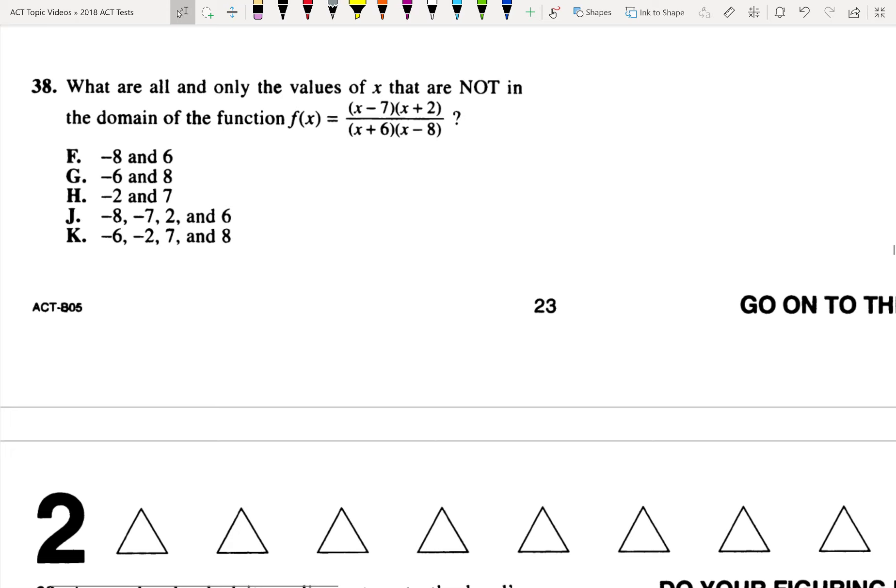Number 38 wants to know what are not in the domain of the function. We always find our restrictions by setting the denominator equal to zero, so that would just be x equals negative six and eight.